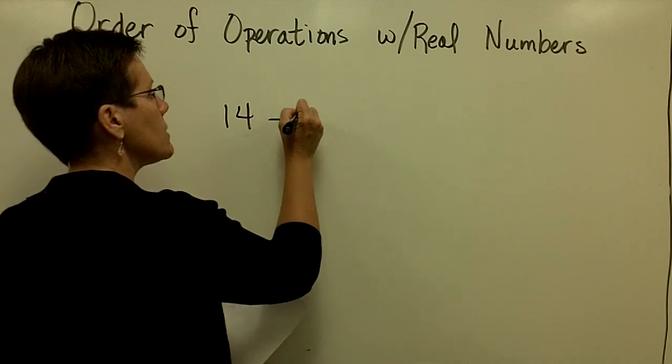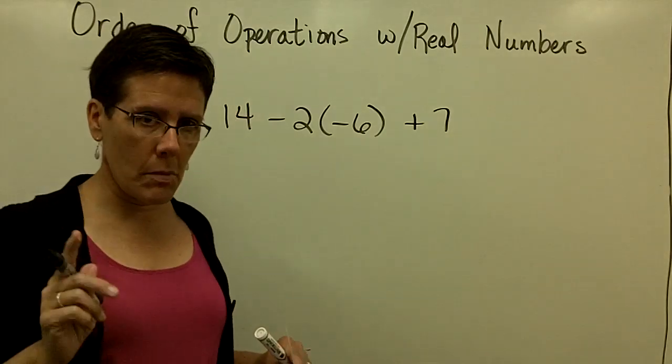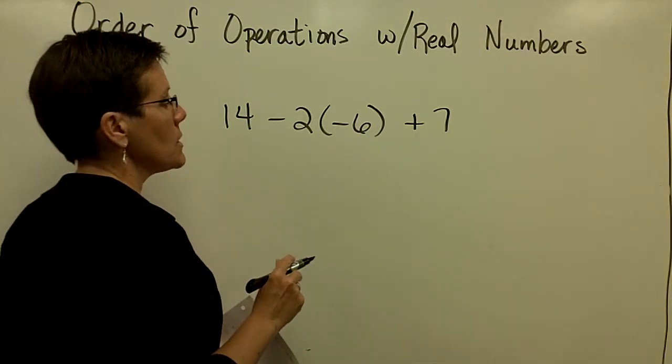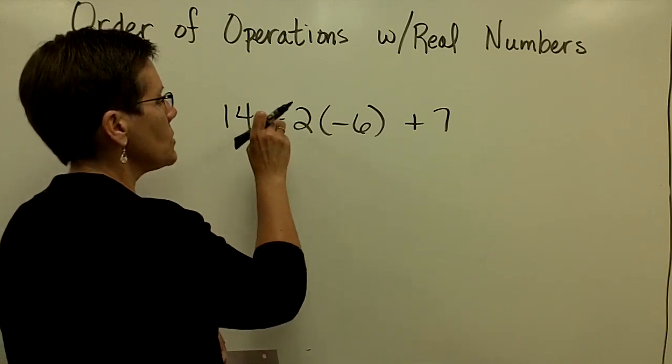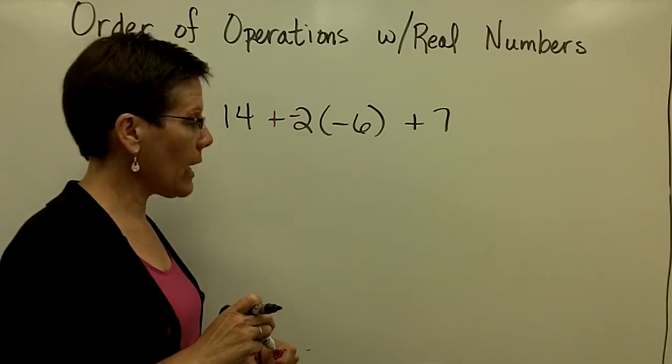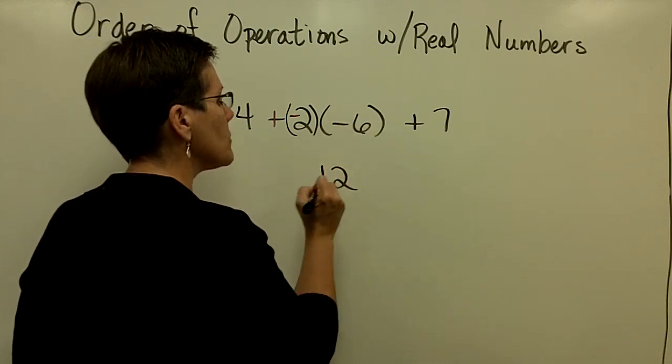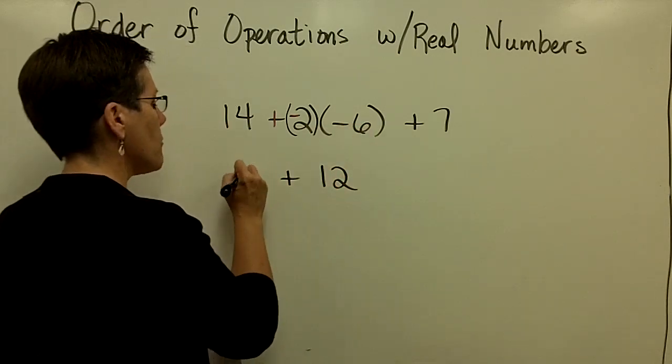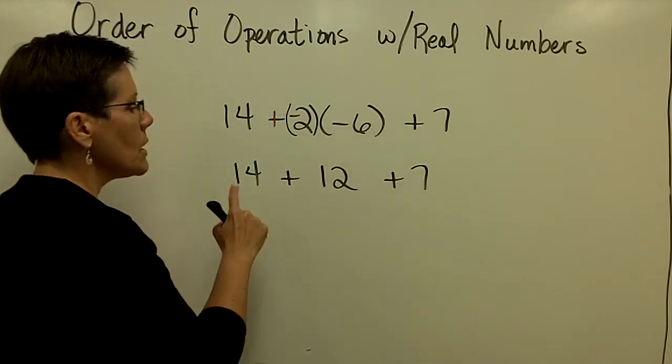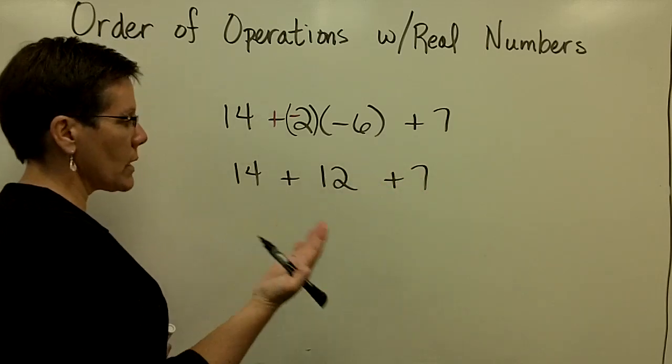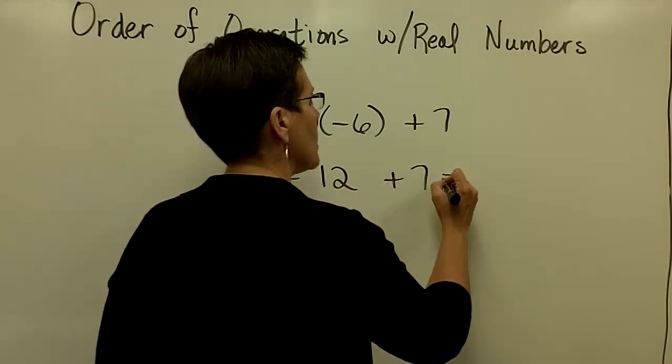14 minus 2 times negative 6 plus 7. This is a little bit unusual. Multiplication comes before addition and subtraction. If you have any interest in making this minus 2 a negative 2, add the opposite. So that you can take negative 2 times negative 6 and get positive 12 there. So you'll have 14 plus 12 plus 7. That's one approach to this problem. I'm going to show you another one in a minute. Then I would just work from left to right. They all happen to be positive numbers, so I can add them all at once. 14 and 12 is 26 plus 7 is 33.